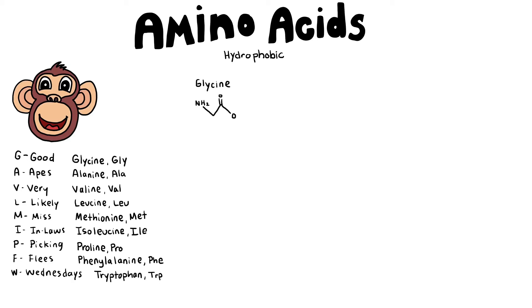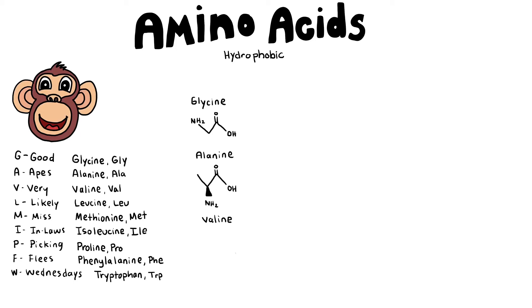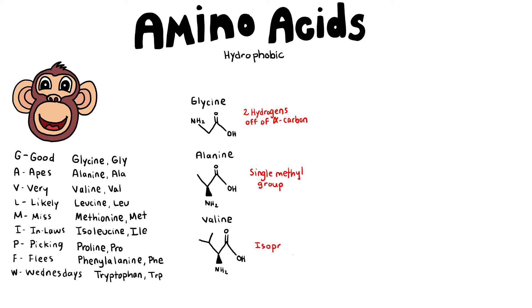Here's a look at some of the structures. Glycine is going to have two hydrogens on its alpha-carbon. Alanine has a single methyl group, and valine has an isopropyl group.